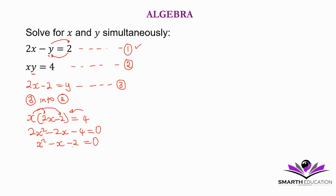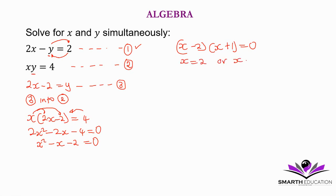We look for the factors of negative 2 that will give us negative 1. That is negative 2 and positive 1. So we have (x minus 2)(x plus 1) is equal to 0, meaning that x is equal to 2 or x is equal to negative 1. Now we can find the value of y using equation 3.